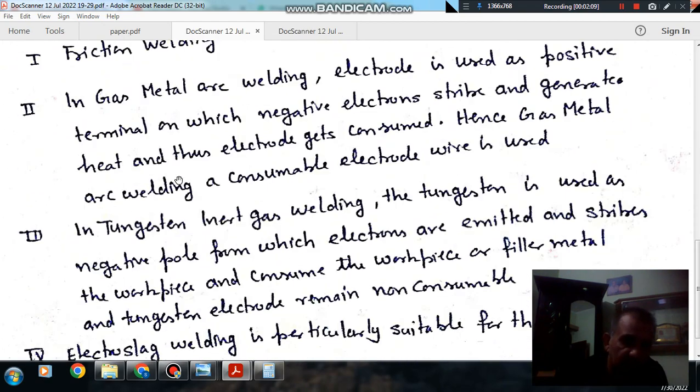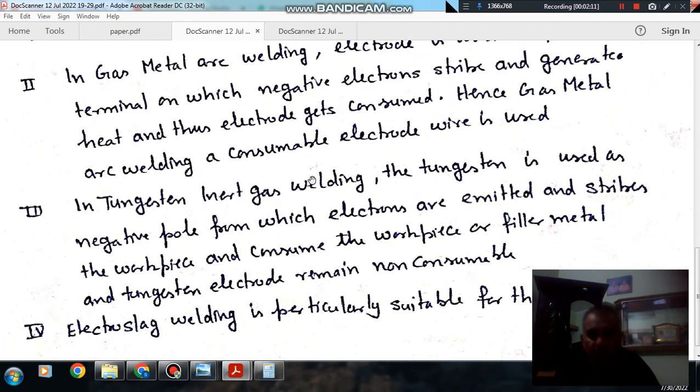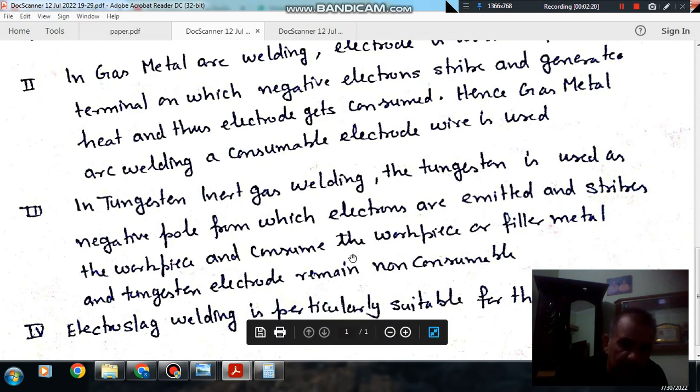In the tungsten inert gas welding, the tungsten is used as negative terminal from which electrons are emitted or generated and strike the workpiece. And as electron strikes the workpiece, it generates most heat at the workpiece.